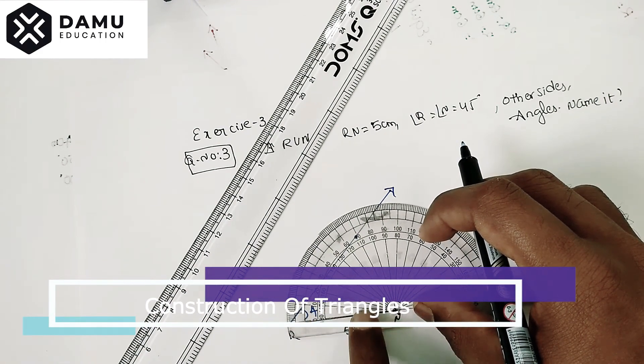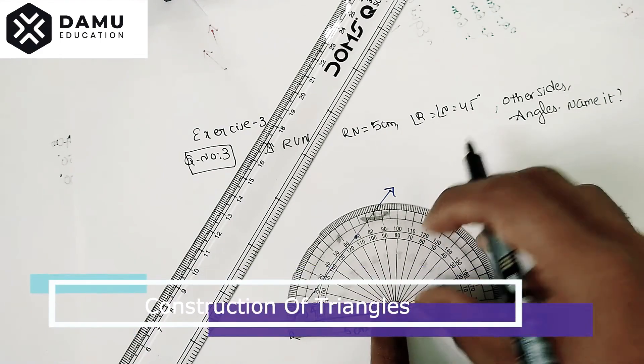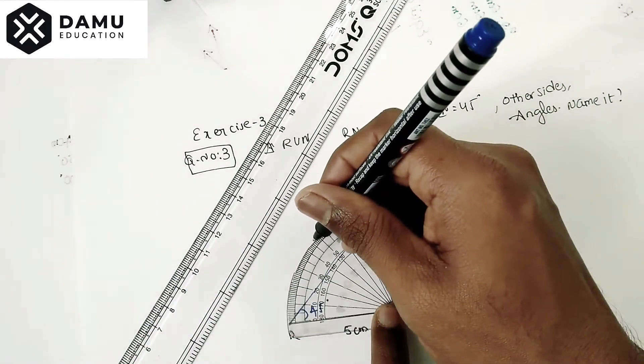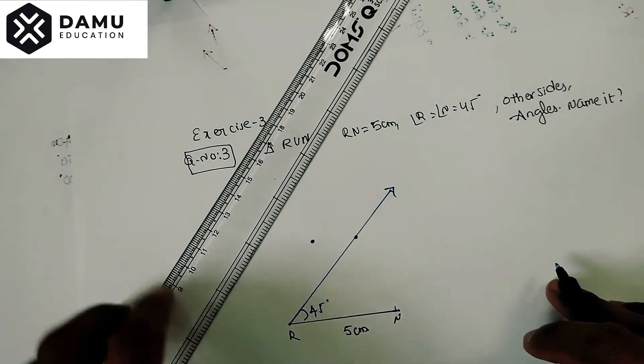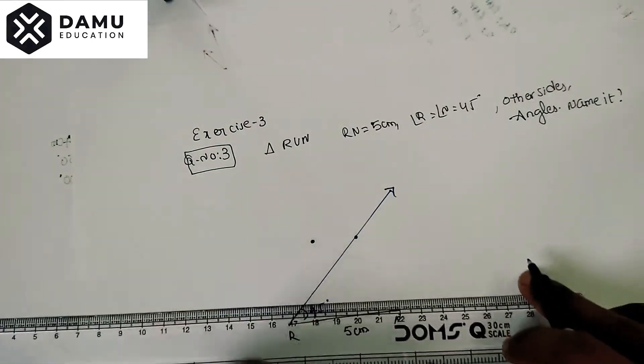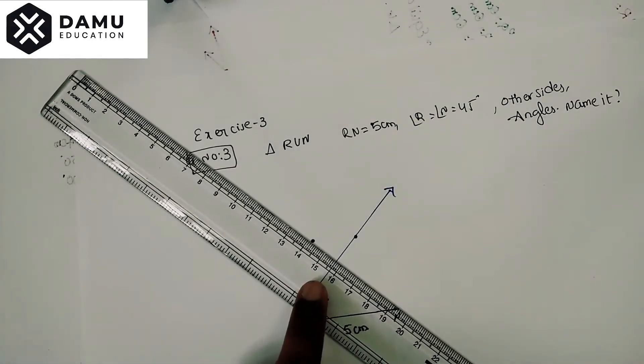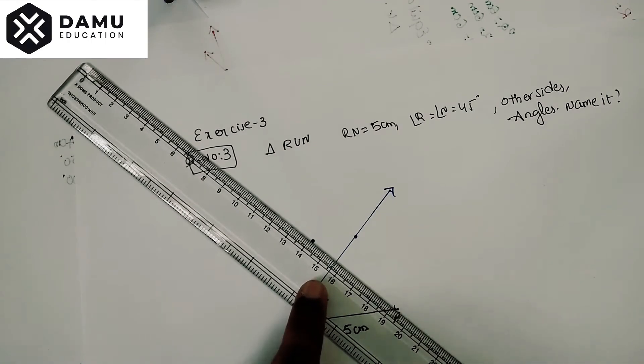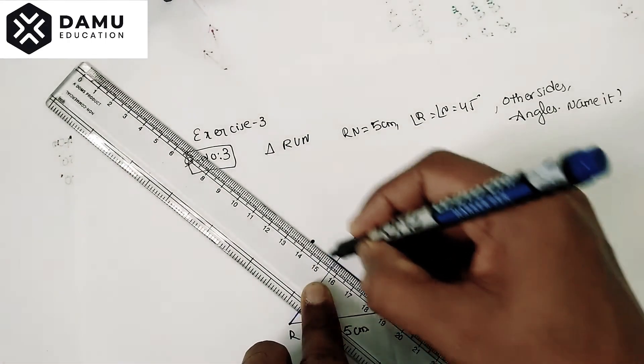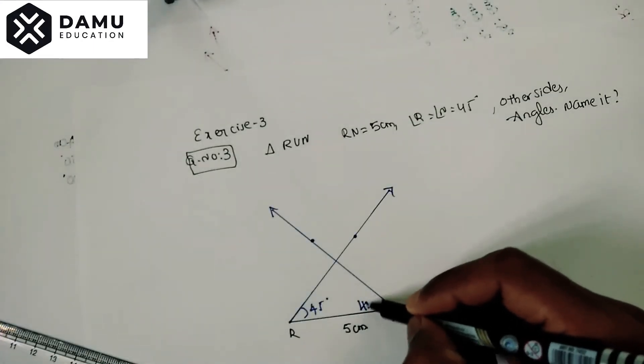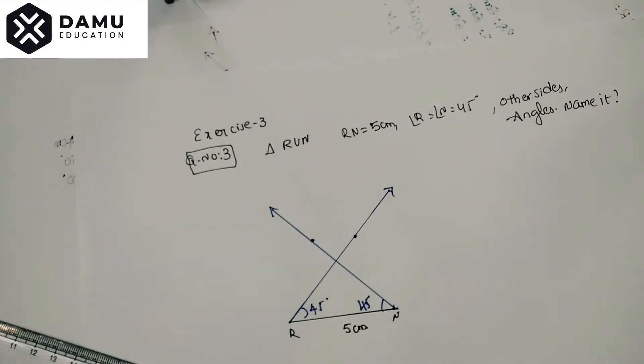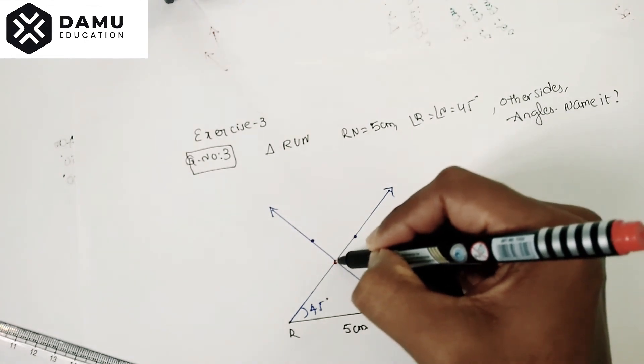So here 45 degrees, draw another ray. With N as the center, draw another ray at 45 degrees. Now where these two points coincide, that is U.